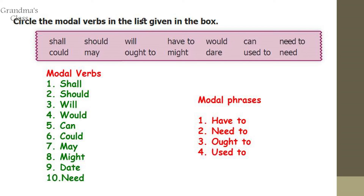Now let's do the exercise given in the textbook: Circle the modal verbs in the list given in the box. There are 14 words given. You are asked to circle only the modal verbs. The modal verbs are: shall, should, will, would, can, could, may, might, dare, must, have to, need to, are to, used to.